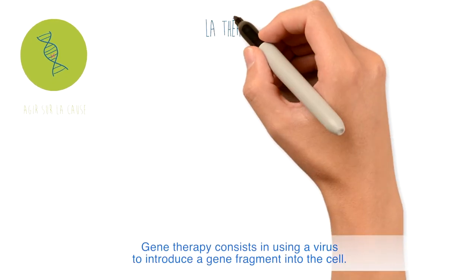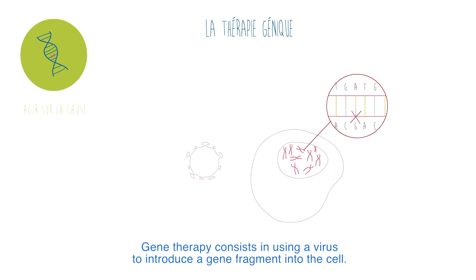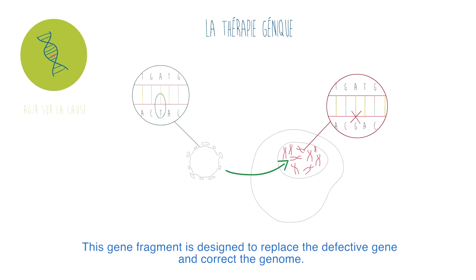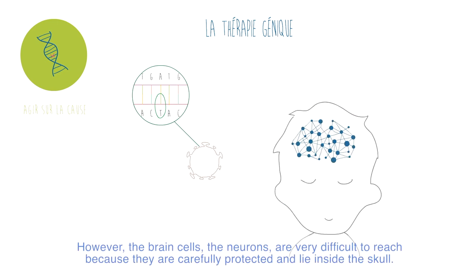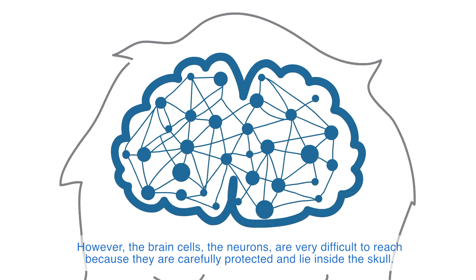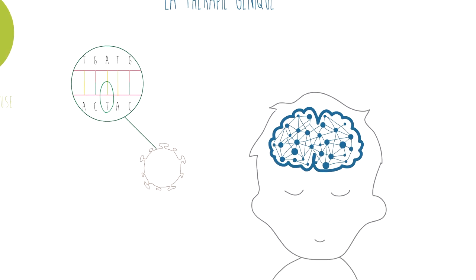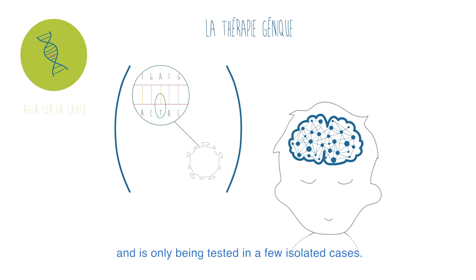Gene therapy consists in using a virus to introduce a gene fragment into the cell. This gene fragment is designed to replace the defective gene and correct the genome. However, the brain cells — neurons — are very difficult to reach because they are carefully protected and lie inside the skull. Gene therapy is therefore not yet an accessible therapy for neurodevelopmental conditions and is only being tested in a few isolated cases.